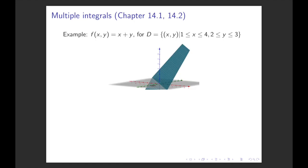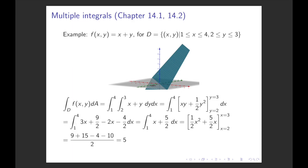Now we have the theory in principle, so let's do an example. We want to compute the integral of the function x+y over the rectangular domain where x is between 1 and 4 and y is between 2 and 3. This is the volume of the solid cut out by this plane with the rectangular xy-domain as base. We have the double integral of x+y with dA = dy dx. The dy is in the inner integral, so that has boundaries from 2 to 3, and x runs from 1 to 4, the boundaries of the outer integral.